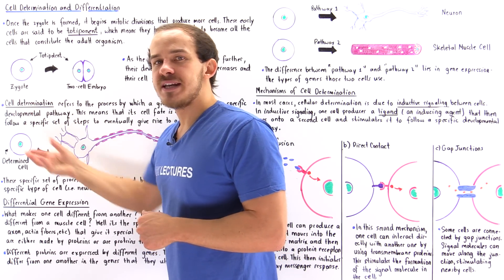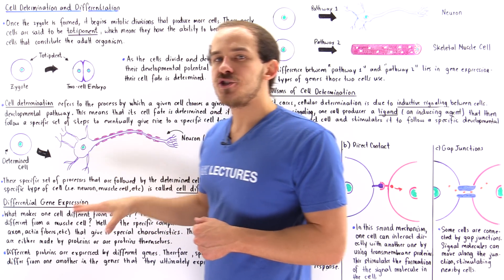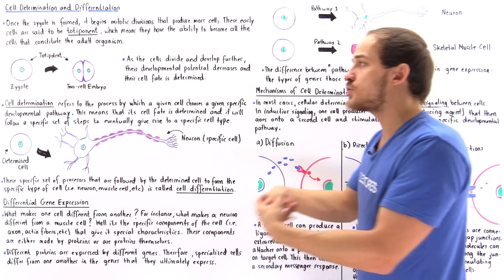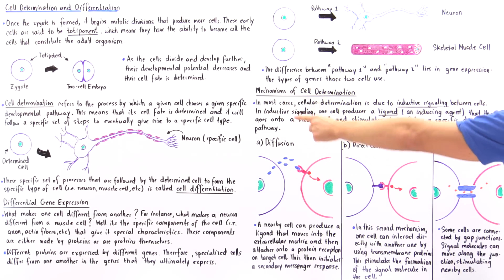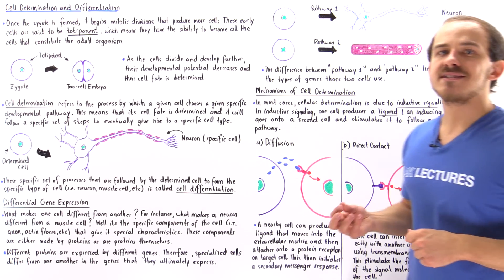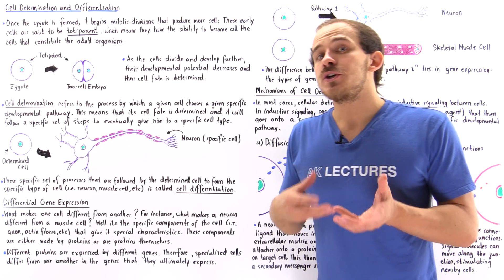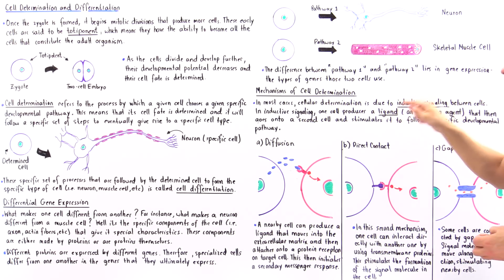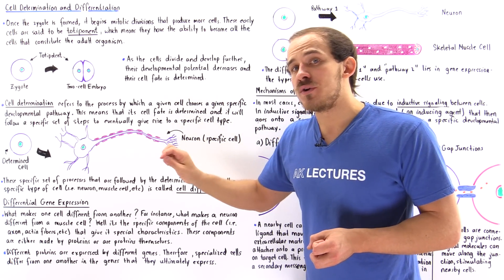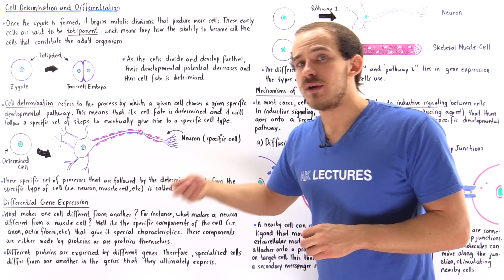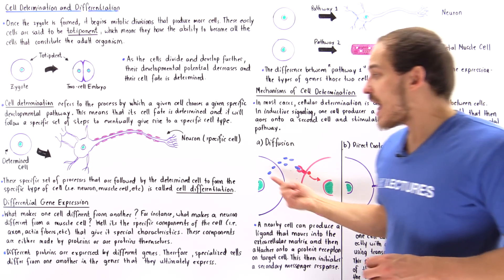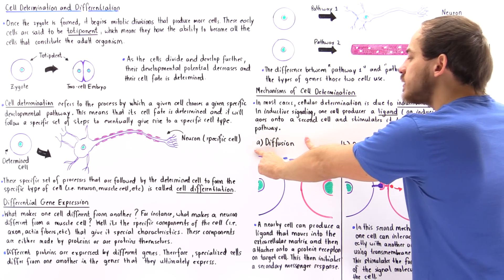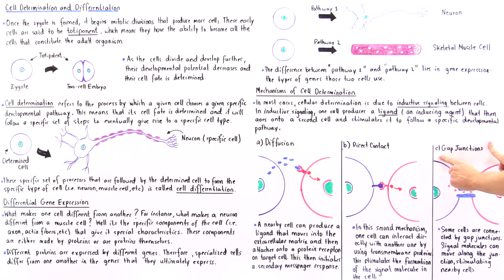Now, what about cell determination? What is the mechanism by which cell determination actually takes place — by which that cell chooses its pathway and follows it to produce a specialized type of cell? Well, in most cases, cellular determination is due to a process known as inductive signaling that takes place between cells. We have three mechanisms of inductive signaling: diffusion, direct contact, and gap junctions.